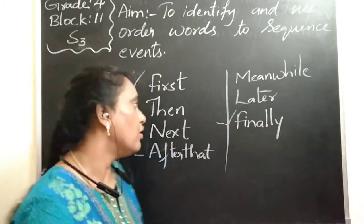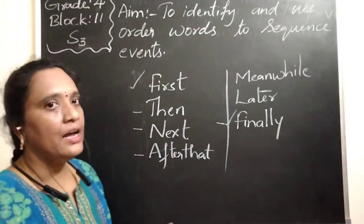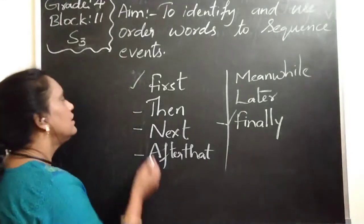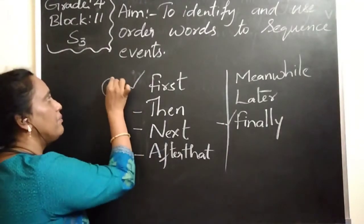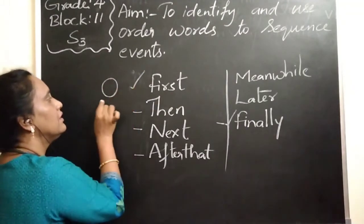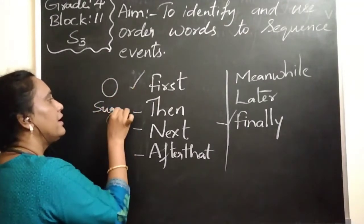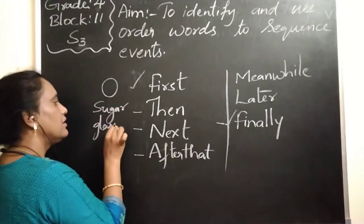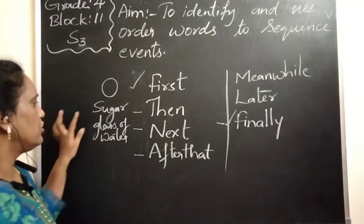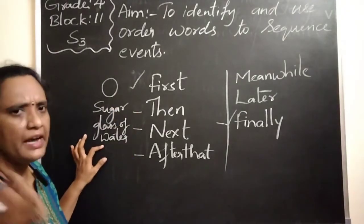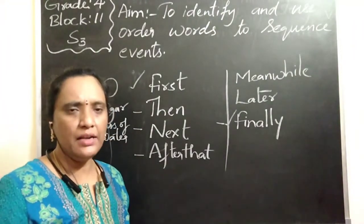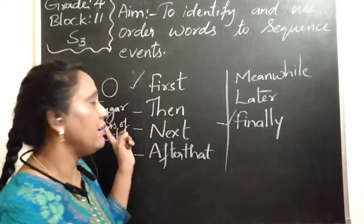Now, let's use a practical example — preparing lemonade. First, we take the ingredients: a lemon, some sugar, and a glass of water. If you want, you can also take a pinch of salt. So first, I take the ingredients and use them in order. This is how we apply order words to describe steps in a process.